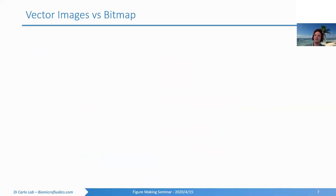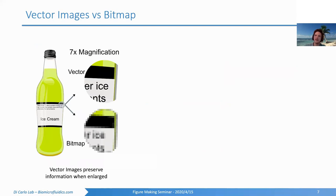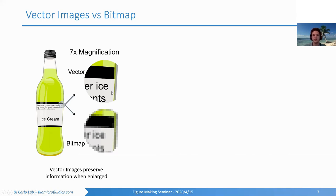This segues into vector images versus bitmap images. A vector image stores information almost like equations — a mathematical representation of lines, gradients, and shapes. A bitmap is literally a gridded sheet where colors are assigned to each square. The key difference you see is when zooming in or transferring data between software. If you magnify a vector image, no matter how far you zoom in, you'll still have crisp lines. With a bitmap, you lose resolution as you zoom in.